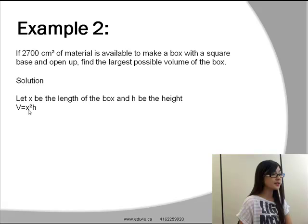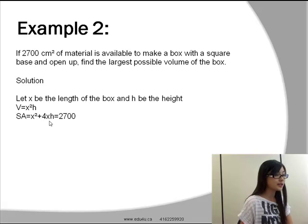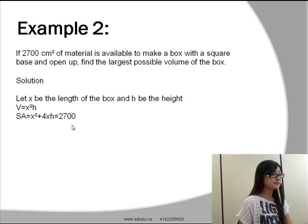The volume will be the area of the bottom times the height, that will be x squared times h. The surface area will be equal to x squared, that's the base, plus the four walls, that will be 4 times xh, which will be equal to 2700.